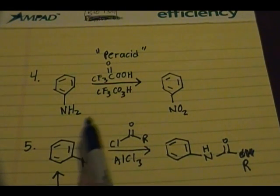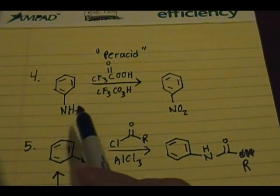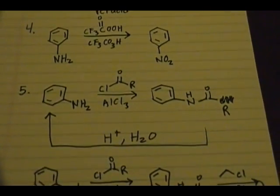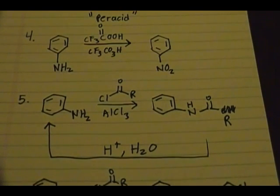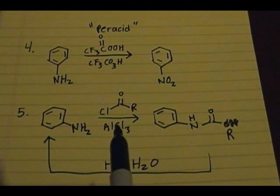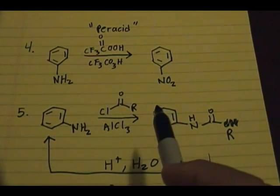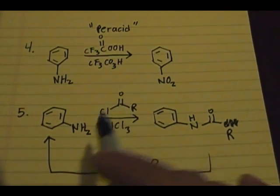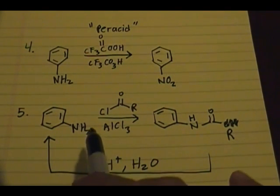The fifth and final reaction is when you have NH2 and you can use the reagents for acylation, for your Friedel-Crafts acylation. However, you're not going to substitute the hydrogen on one of these carbons for this group. What's going to happen is you'll substitute a hydrogen on the NH2 for the acyl group.